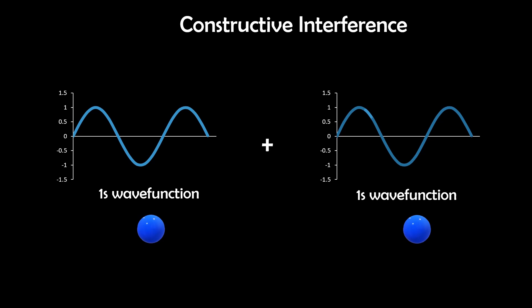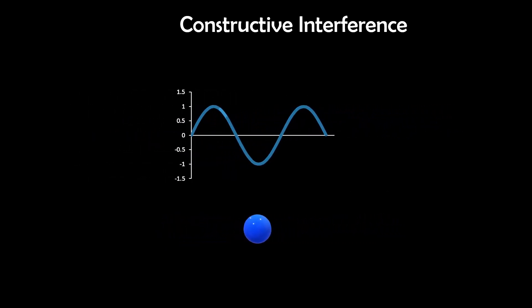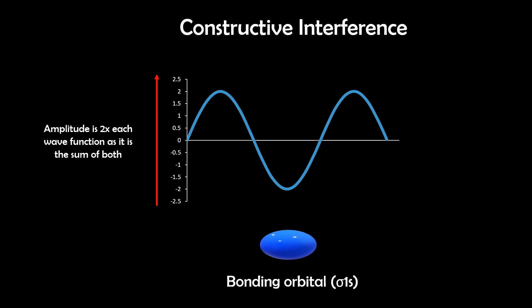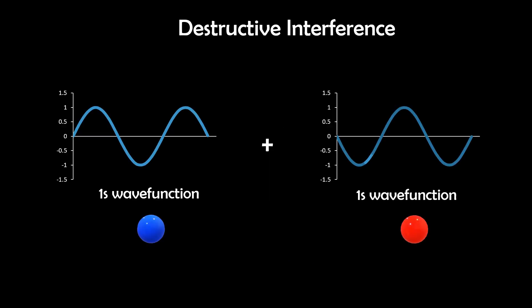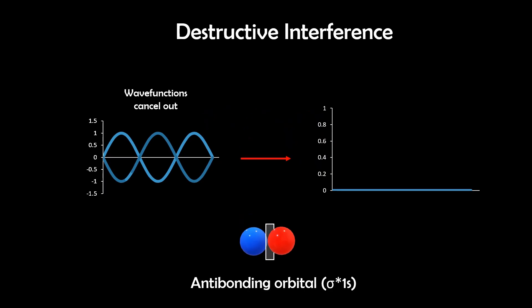So quantum mechanically, this can be explained by the interference of wave functions. The bonding orbital results from constructive interference between the 1s orbitals, while the anti-bonding orbital results from destructive interference, producing a node.